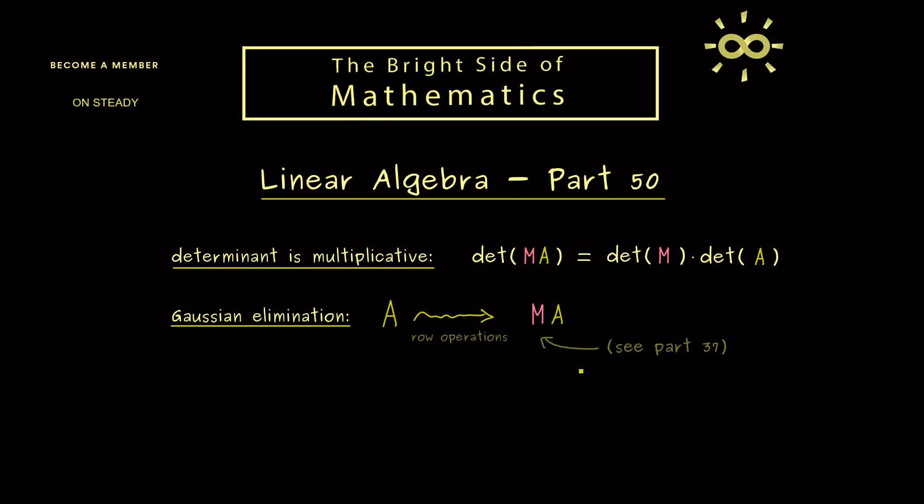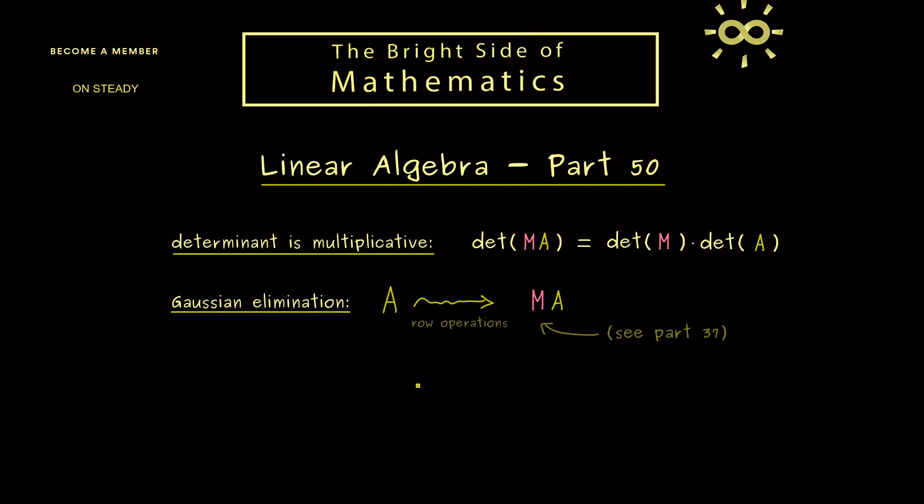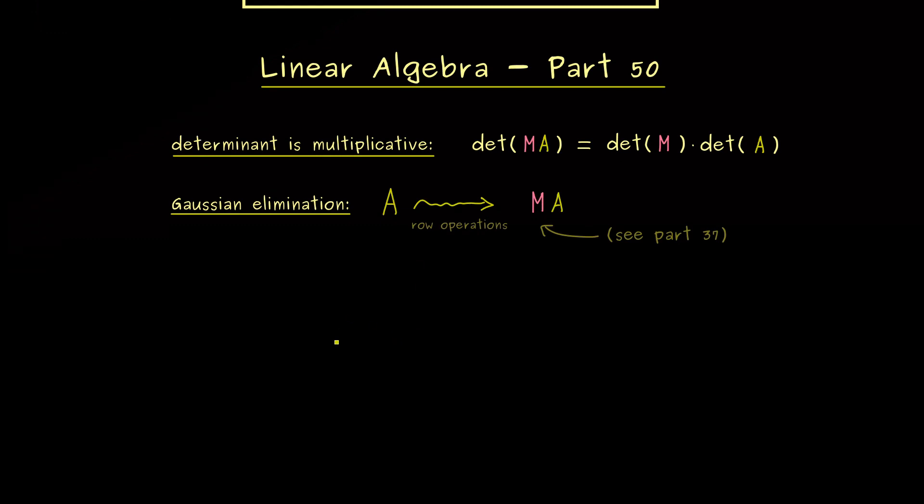And indeed, we have already discussed that in all detail in part 37. And now the question is, what do we know about the determinant of such a matrix M? Because that's what we need to calculate the whole determinant here. So in order to understand that, let's look at some simple row operations again.